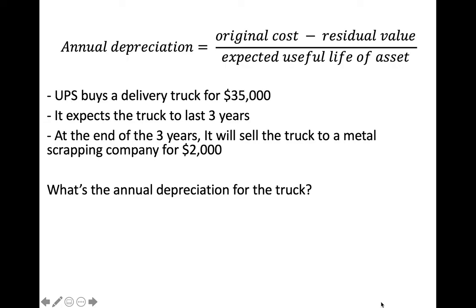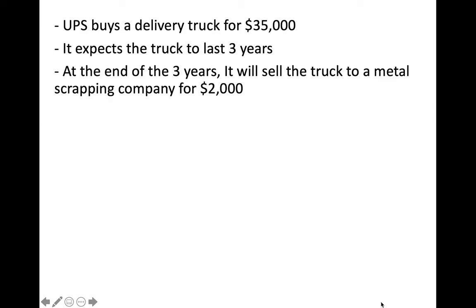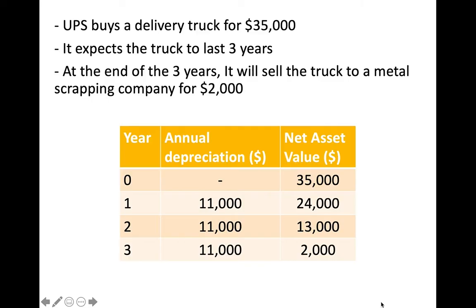The cost of the asset is calculated by subtracting the residual value — in our example, the money we get from selling the truck to the recycling company — from the original cost of the truck. Applying the formula, we get that we should depreciate our truck by $11,000 per year. In the table, we can see the value of the asset at the end of every year: we buy the truck for $35,000, it loses $11,000 of value per year, until we sell it for $2,000.